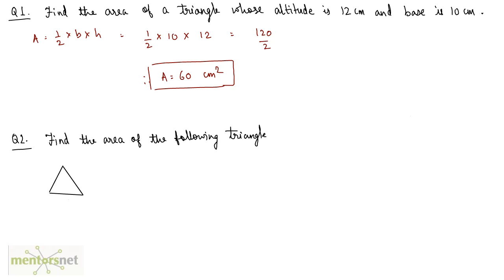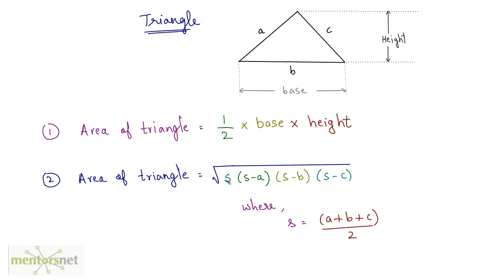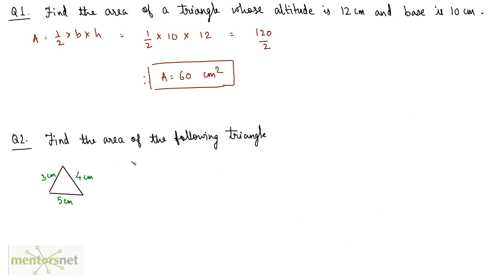Now let us look at the second question. We have to find the area of the triangle given here. We have been given the sides of this triangle and we don't know the base and height. We use the formula: square root of S into (S minus A) into (S minus B) into (S minus C). First, we calculate the value of S. S is equal to (3 plus 4 plus 5) divided by 2, which is 12 by 2, so S equals 6.